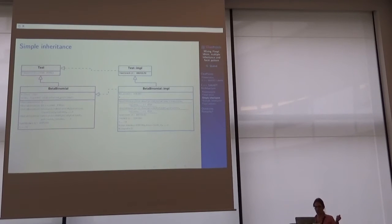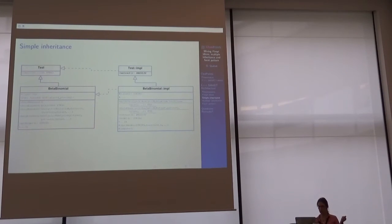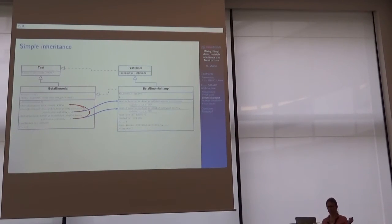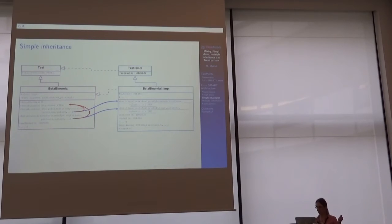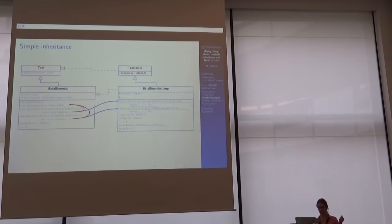In the case of simple inheritance, we have a test called beta-binomial — this is the kind of relationship. We have the public interface in pink and the private instance in blue. We have two constructors depending on what kind of analysis or test we want to run. Those public constructors call the static build function in the private instance, which returns a shared pointer, and that shared pointer is passed to the public constructor. So beta-binomial PTR calls back that constructor, which calls back the PIMP constructor.